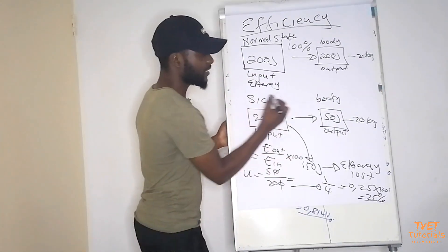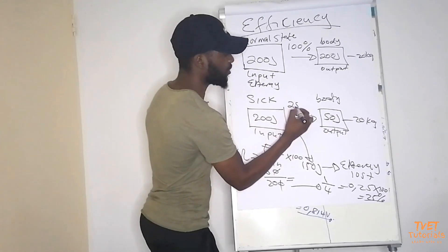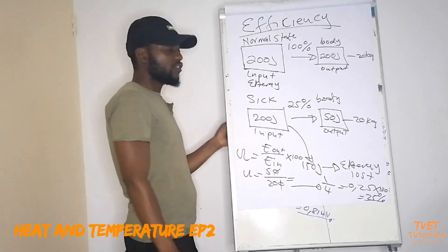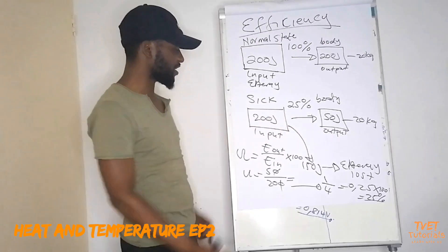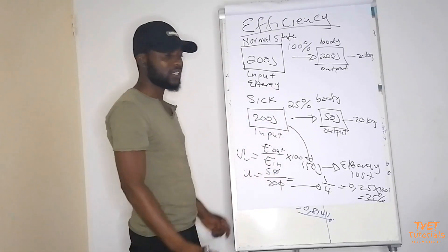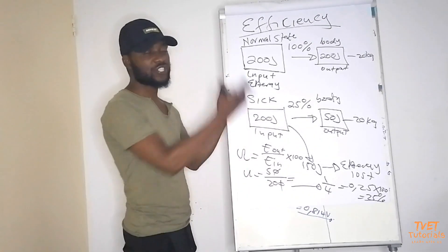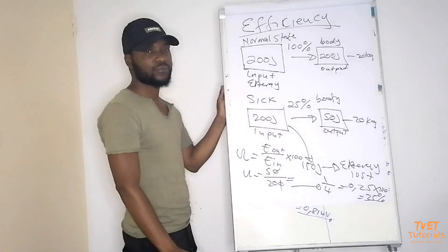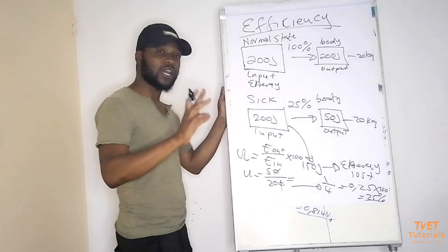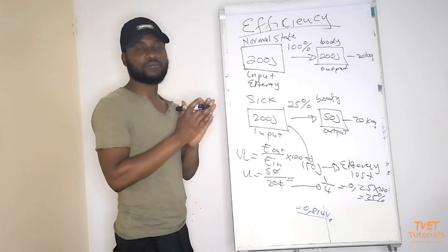So it means that this person is 25% effective. The 50 joules is actually 25% of 200 joules. Efficiency is calculated using the ratio of output to input. On the next video we are going to talk about power and also couple everything with efficiency.